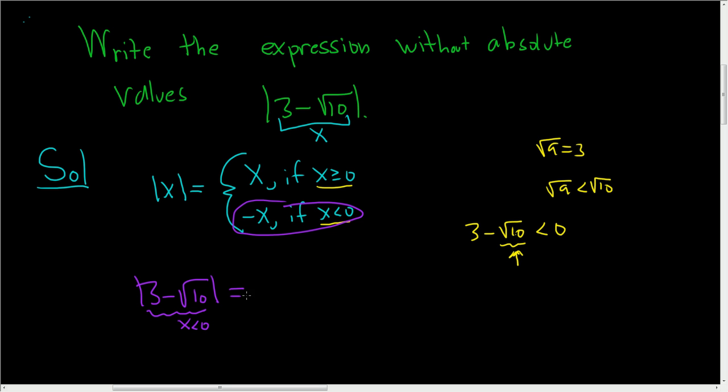So all we do is we put a negative sign in front of our x. So this is 3 minus the square root of 10. And then we can distribute, so we end up with negative 3, and then negative and negative is positive, so we get plus the square root of 10. I hope that made some sense.